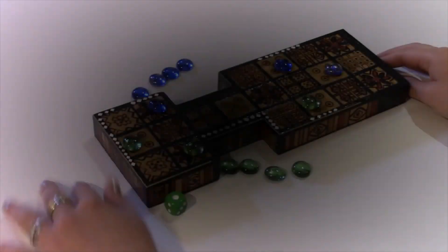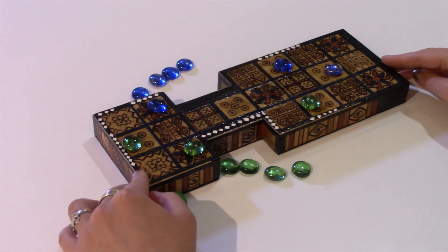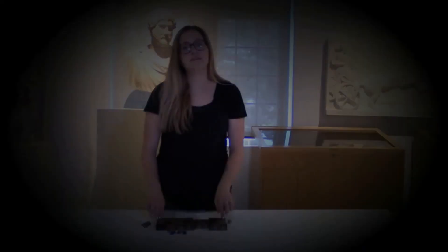The game ends once one player is able to get all seven of their pieces across the board and off the other side. And that's how you play the game of Ur.